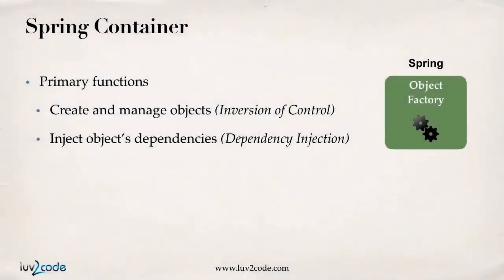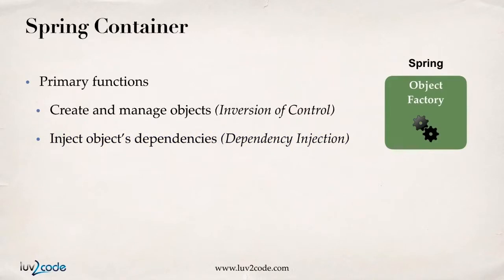Now we're into some real Spring stuff. The Spring container's primary functions are: one, create and manage objects — that's your inversion of control — and two, inject object dependencies, which is what they call dependency injection. We'll cover all of this in the course; I'll start with inversion of control, and then in the following videos we'll get into dependency injection.